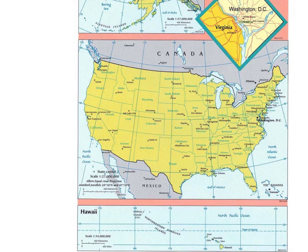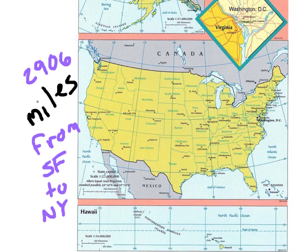Let's say I wanted to drive across the country and know how far it is from San Francisco all the way to New York. I would not want to measure in inches — even in feet or yards there would be a lot. So I need another unit of measurement within the customary system: miles. The distance between San Francisco and New York driving is about 2,906 miles, which would take about 1 day and 19 hours to drive.